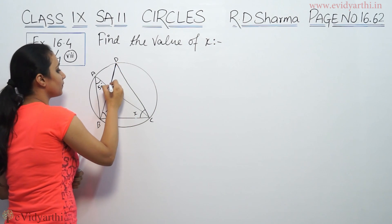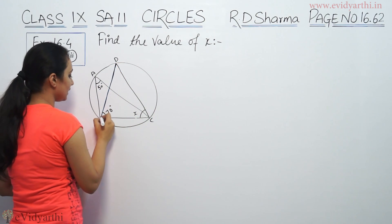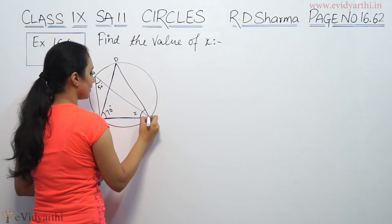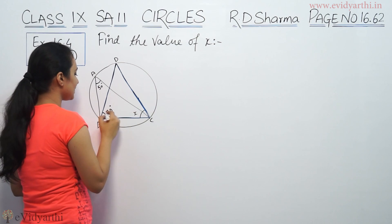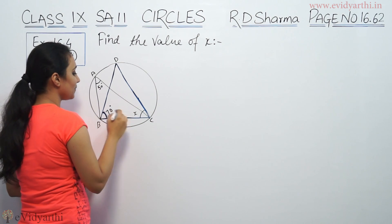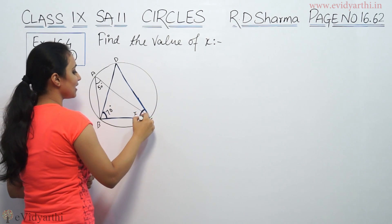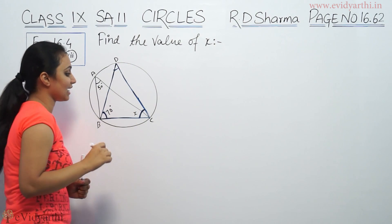This angle is 70 degrees, this whole angle is x, and this angle is another angle.